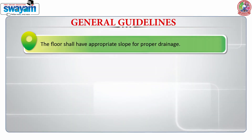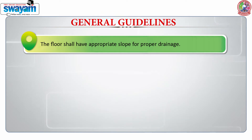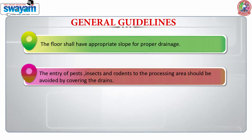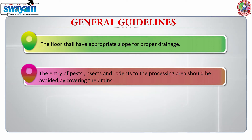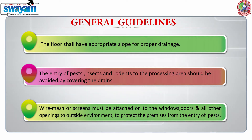When we talk about flooring, there should be a proper slope for drainage, because lots of water is used in processing food. It is very important to keep a check on the entry of pests, insects, and rodents into the processing area. This can be done by covering drains, as these are the routes through which pests enter the food plant. We should also have wire mesh and screens on windows and doors, and ensure all openings to the outside environment are protected and covered.